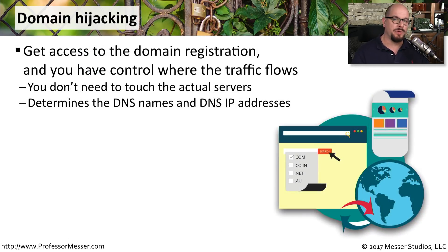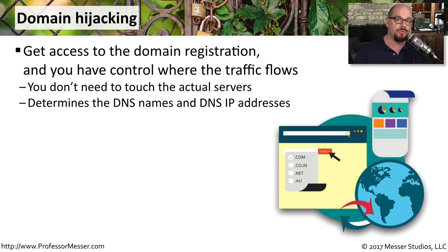Many DNS servers are well protected, so it's sometimes difficult to poison the information on a single DNS server. Instead, what if we could change which DNS server is being used for our particular domain name? We do this through a technique called domain hijacking — we gain access to the domain registration, where all of the primary DNS information is input. This means we don't have to change anything with the existing DNS server; we simply change our domain information to point to a DNS server controlled by the bad guys.